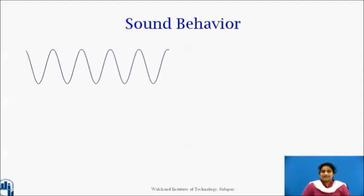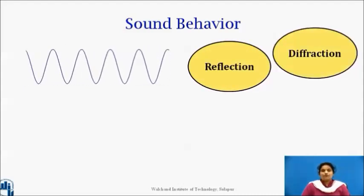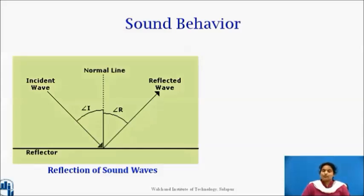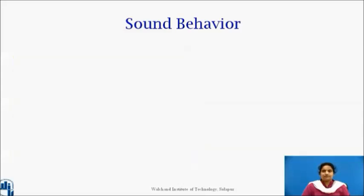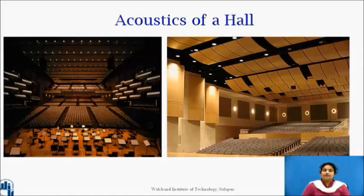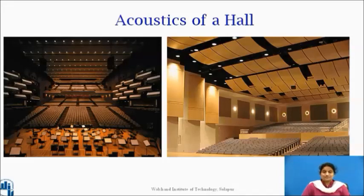When sound encounters an obstacle, it undergoes reflection as well as diffraction. Sound waves are reflected like light waves and obey similar laws. Flat surfaces reflect sound waves such that the angle of incidence equals the angle of reflection. Sound waves are reflected when the dimensions of the obstacle are large in comparison to the wavelength. Sound waves also have the ability to go around obstacles in their path, penetrating into the area behind them. This figure shows the diffraction of sound passing through a slit. Diffraction occurs whenever the wavelength of the wave is larger than the obstacle or opening, and the amount of diffraction increases with increasing wavelength.